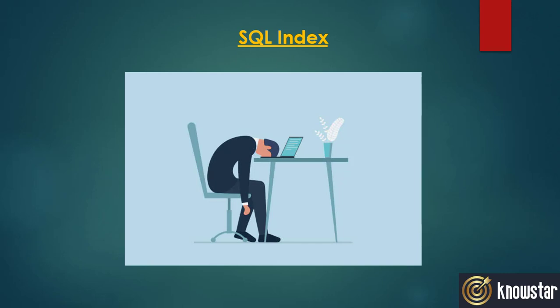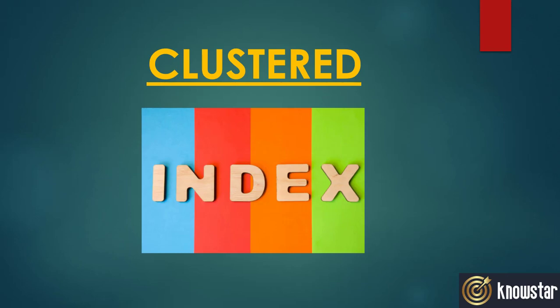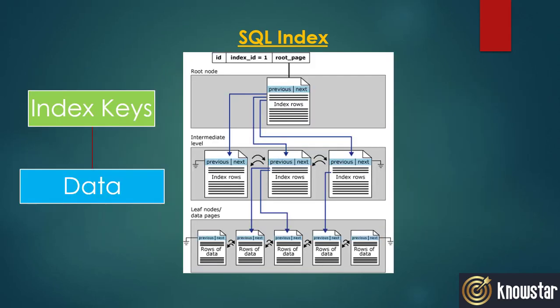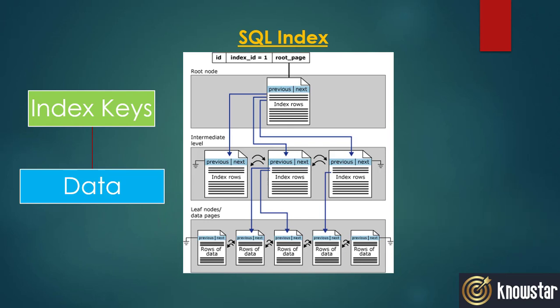An unnecessary table scan can have a performance penalty, so the better way is to create an index on this table. This brings us to the two common types of index. A clustered index will physically sort the data based on the columns included in the index. When a query navigates through the clustered index tree to the base table data, this is called a clustered index seek.